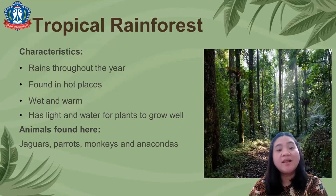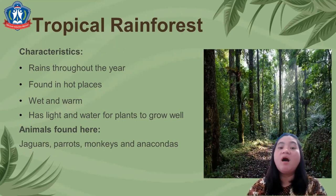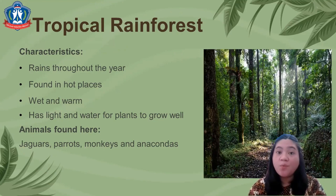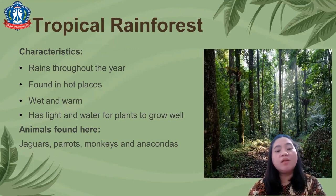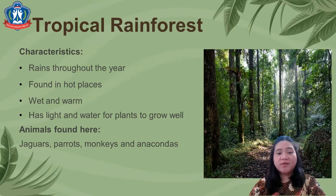First, tropical rainforest. The characteristics are: it rains throughout the year, and it is found in hot places like our country, Indonesia. It is wet and warm, and has light and water for plants to grow well.